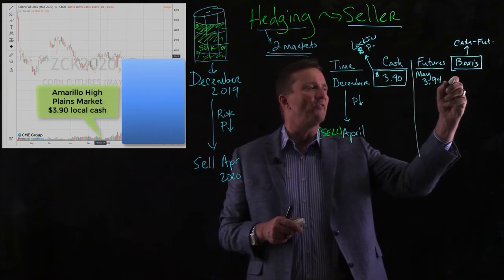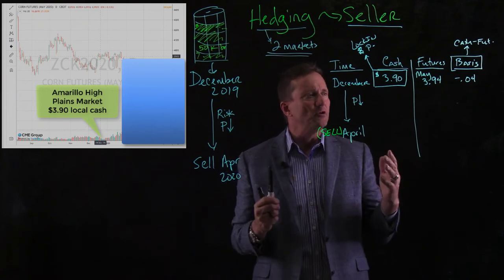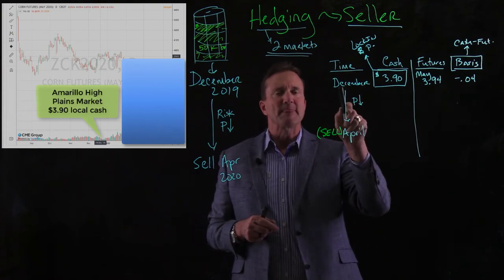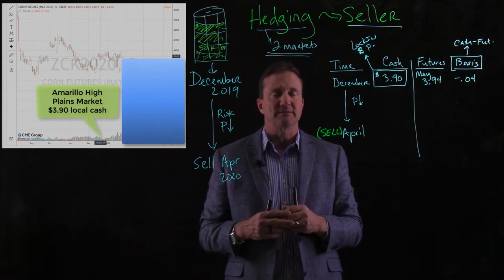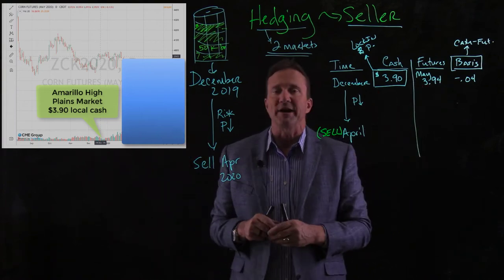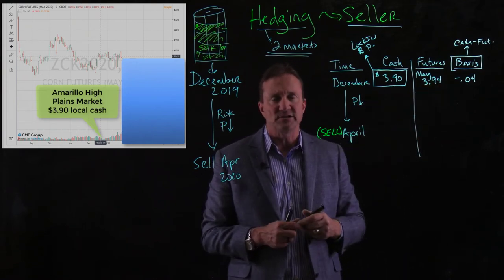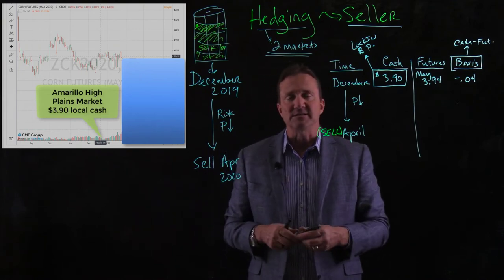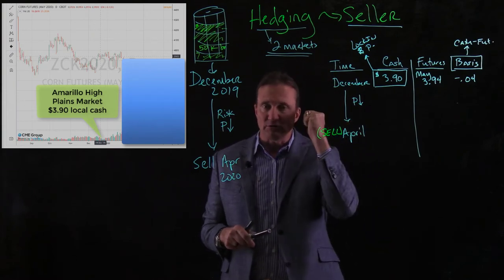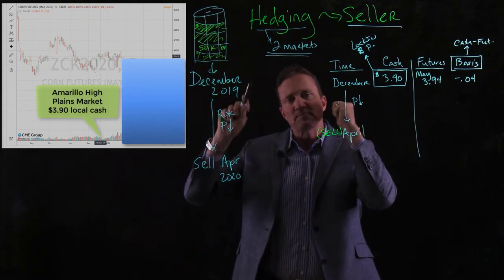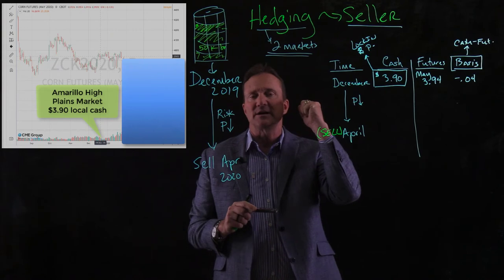The futures market is not Amarillo — it's the CME Group, the Chicago market, a worldwide market where people are trading. The May contract is trading at $3.94. Now another key term: basis is calculated as cash minus futures price. So $3.90 minus $3.94 equals a negative four-cent basis. That's a term you need to know.